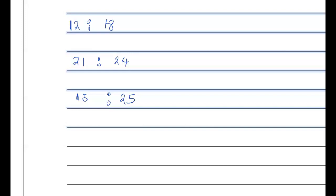Both 12 and 18 are in the six times table, so 12 divided by six is two, and 18 divided by six is three. So it's two ratio three. Now for 21 ratio 24 — which number can go into both 21 and 24? It's three. So 21 divided by three, and 24 divided by three is eight. For 15 to 25 divided by five gives you three ratio five. Those are the correct answers.